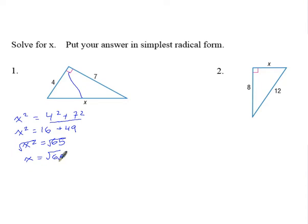And so that gives us an answer in simplified radical form of x equals square root of 65. If you wanted to put that in decimal form, that comes out to be about 8.1. So either one of those answers would be appropriate there.